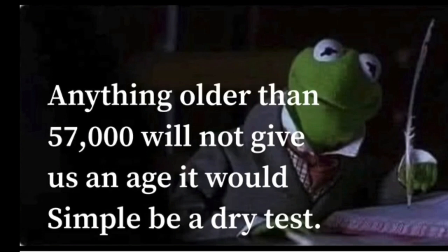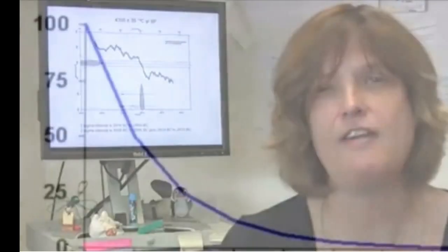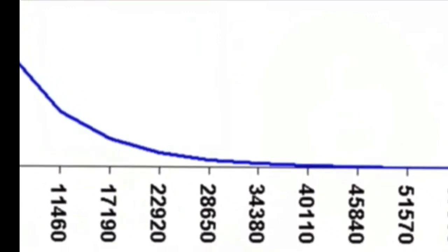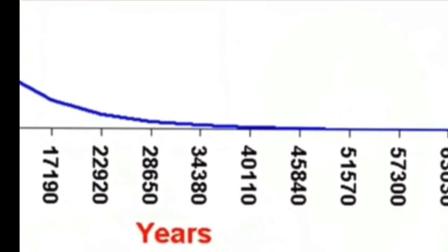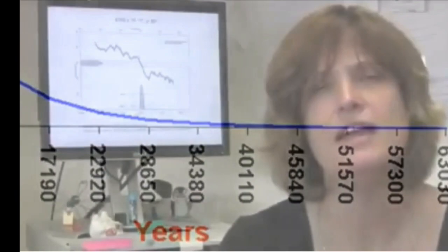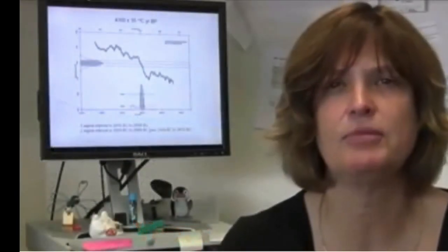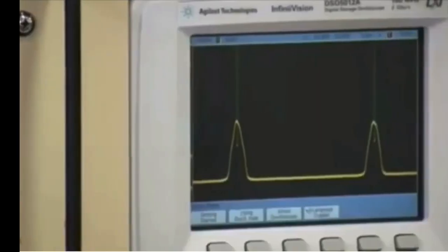Yet to date, there has not been one single dry test. After about 10 half-lives, which would be 57,000 years, the amount of C14 that was originally in that organism is so tiny that we can't really accurately and precisely measure it with most of the radiocarbon dating equipment in laboratories around the world.